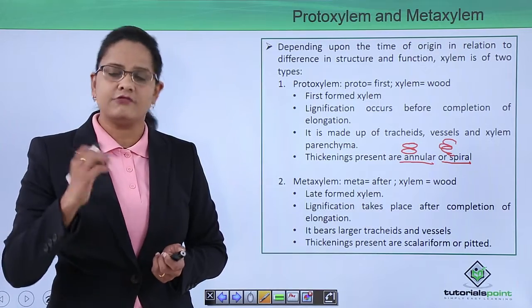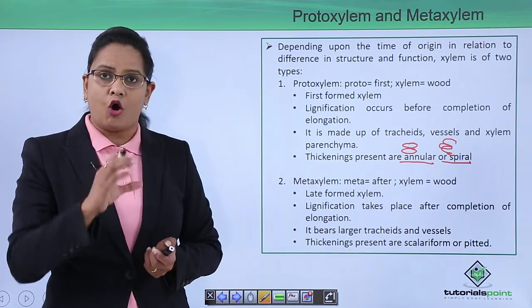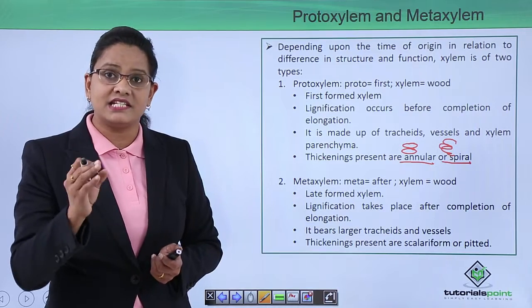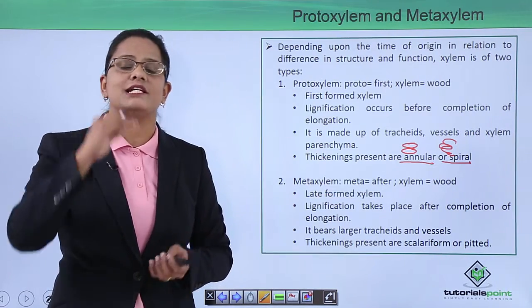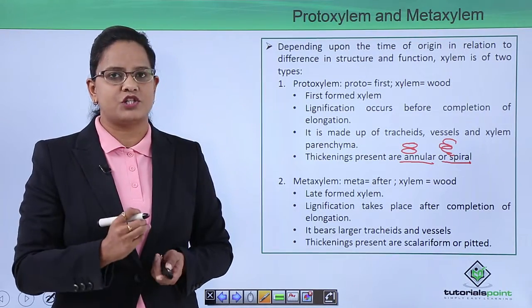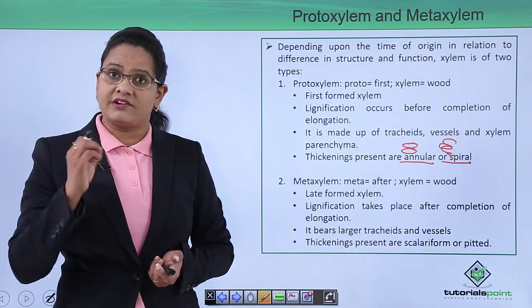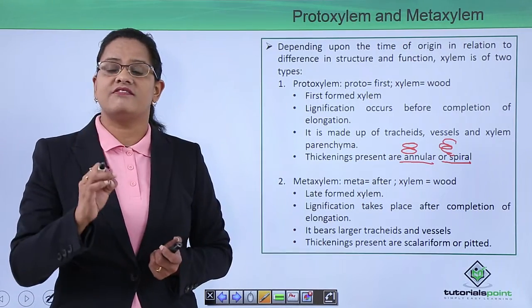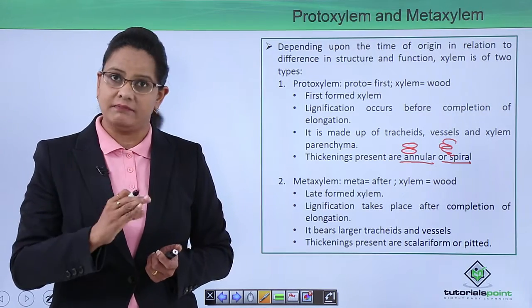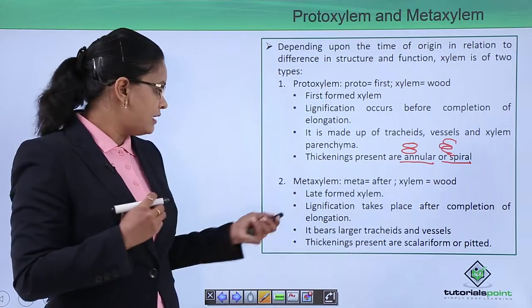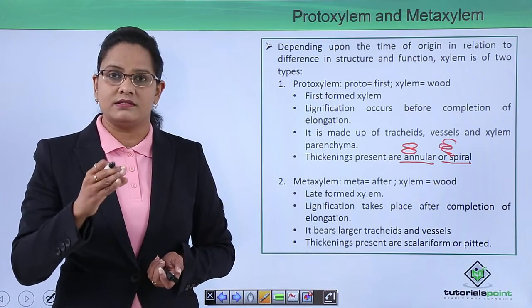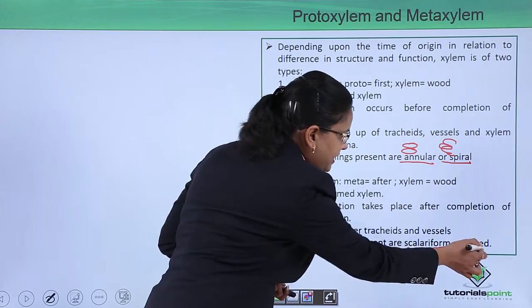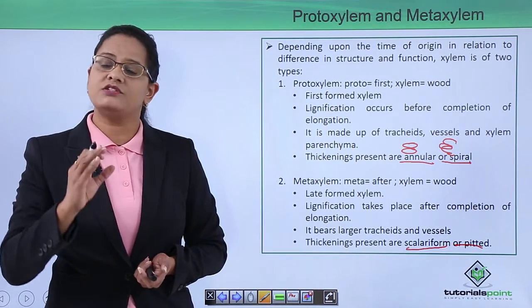Meta xylem — 'meta' means after — is the later-formed xylem. In meta xylem, lignification takes place after the completion of elongation, so lignin deposition happens once the cell has elongated to its full length. The tracheids and vessels in meta xylem are comparatively broader and larger in size, unlike proto xylem where they are narrower and shorter. The thickenings present in meta xylem are scalariform, pitted, and reticulate thickening.